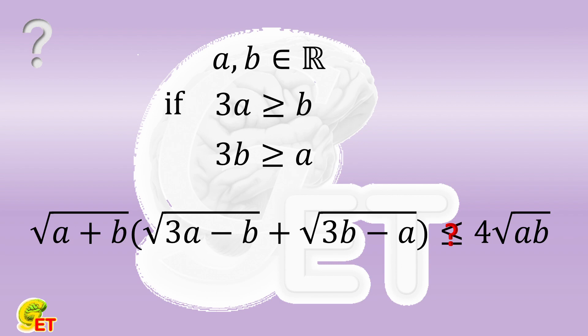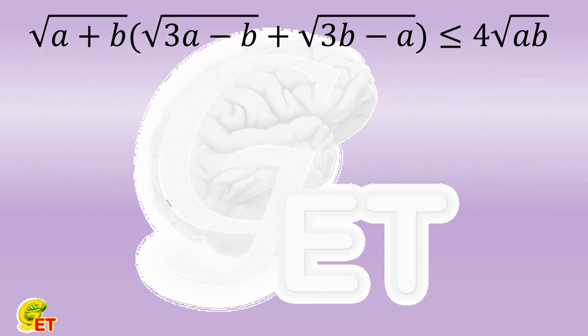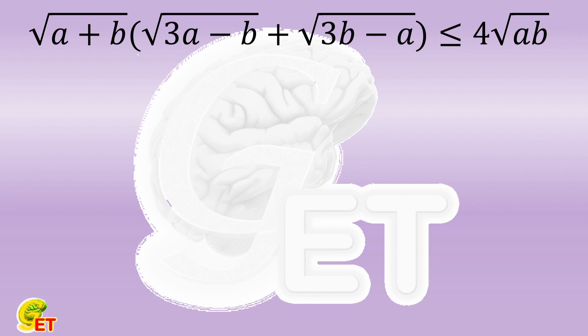This inequality looks a bit complicated. We can make its form simpler and clearer by substituting the variables, which can help us find an idea more easily. So we set the square root of 3A minus B as X, and the square root of 3B minus A as Y. Of course, neither X nor Y will be smaller than 0.